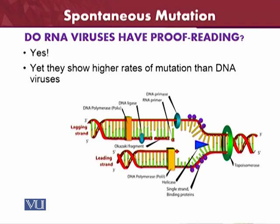Do RNA viruses have proofreading ability? The RNA viruses do show higher rates of mutations than DNA viruses. RNA is generally single-stranded, so it has a greater tendency to be mutated compared to DNA, which is double-stranded and more stable than RNA.